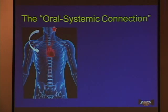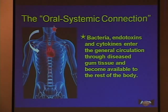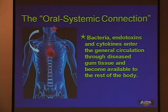This leads us to discuss the oral-systemic connection and what happens as this turns chronic and systemic. The oral-systemic connection is simply defined as bacteria, endotoxins, and cytokines entering the general circulation through diseased gum tissue and becoming available to the rest of the body.